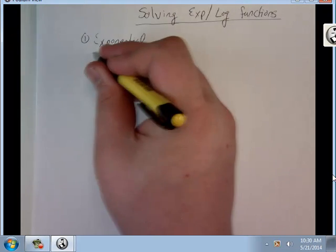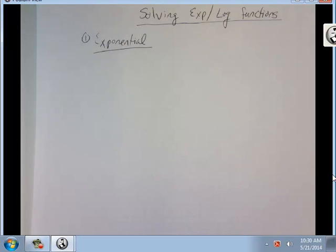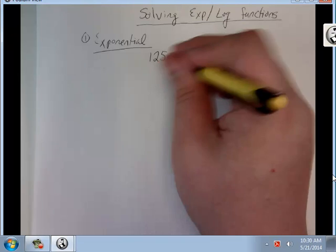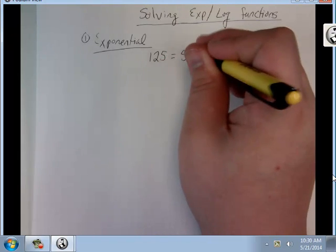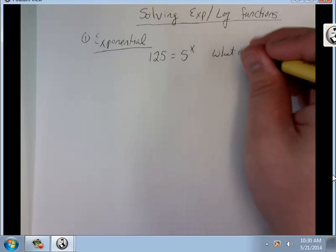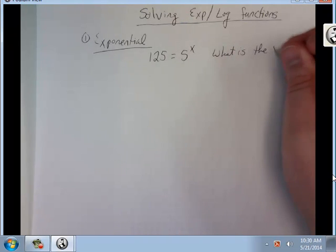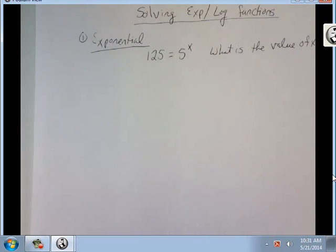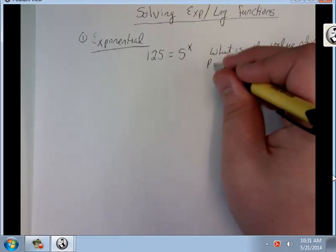We're going to start with this. Let's say we had 125 equals 5 to the x. What is the value of x? So, it's actually a fairly simple process once you get the hang of it.